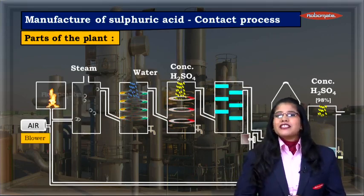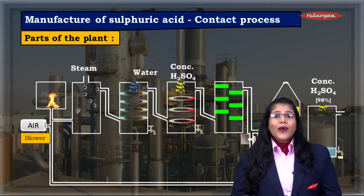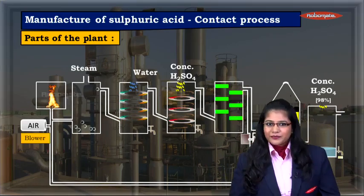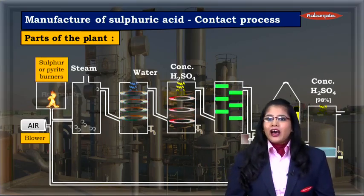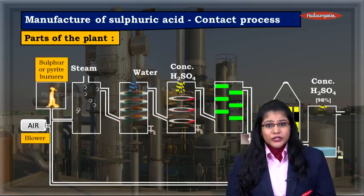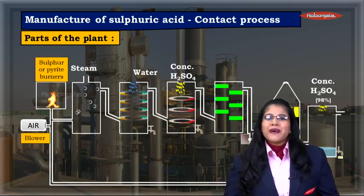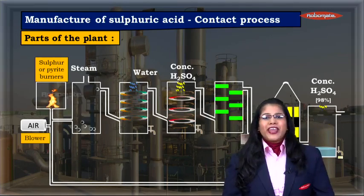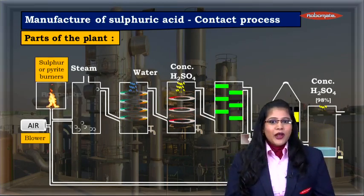First on the left hand side we have the blower where air is pumped inside the plant. We also have the iron pyrite or sulphur burners where sulphur or iron pyrite undergo oxidation in the presence of air to form sulphur dioxide.